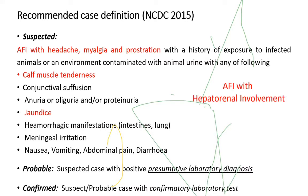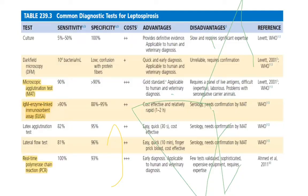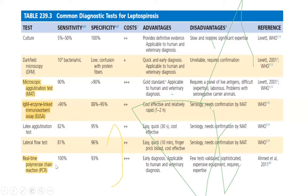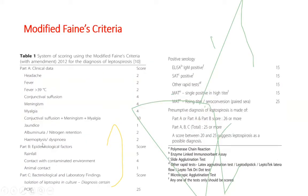Any febrile illness with hepatorenal involvement should have leptospira considered as one of the differentials. Diagnostic tests for leptospira include: dark field microscopy (not routinely done as it requires special instruments); microscopic agglutination test (MAT), which is the gold standard with high sensitivity and specificity but cumbersome; IgM ELISA; rapid lateral flow test; and latex agglutination ICT cards. Real-time PCR can also detect leptospira directly from blood or urine samples. A modified Faine's criteria incorporates clinical, epidemiological, and laboratory findings.